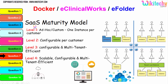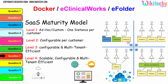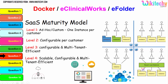You are able to see Level 1 here — one instance per customer. Level 2 is configurable per customer, you can see different color-coded instances. Level 3 is configurable with multi-tenancy, where you have a load balancer and a scalable, configurable multi-tenant setup. This is your cloud computing network or environment.